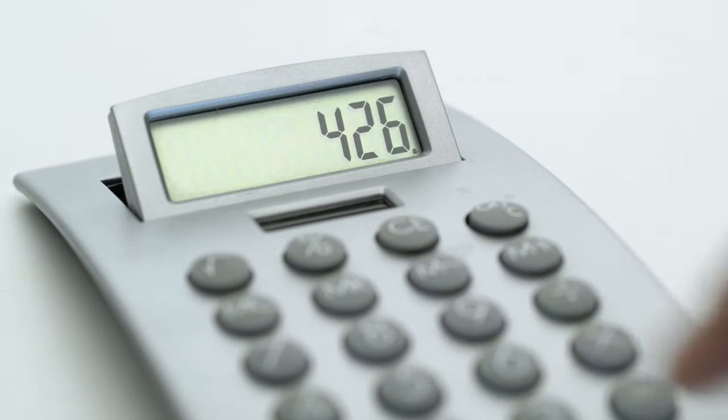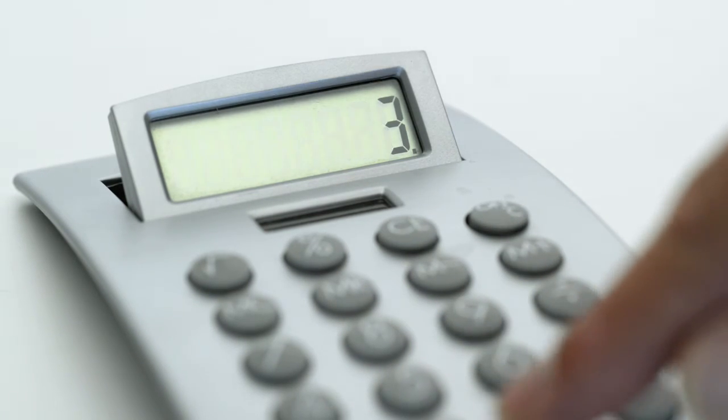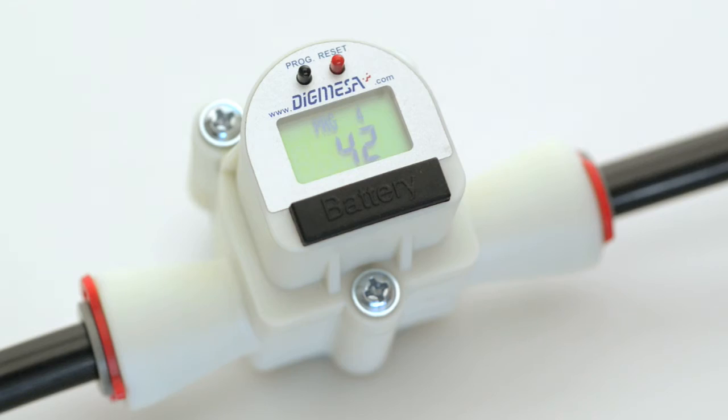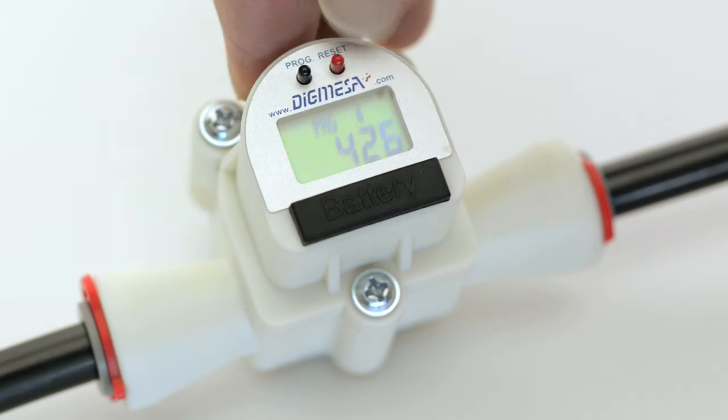Now convert into gallons. 426 times 3.78 equals 1610. This is your impulse count per gallon, which you can now program in as previously shown.